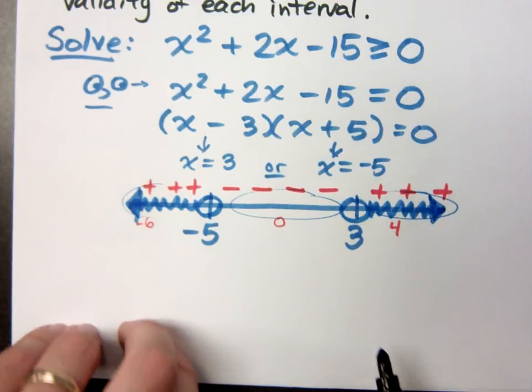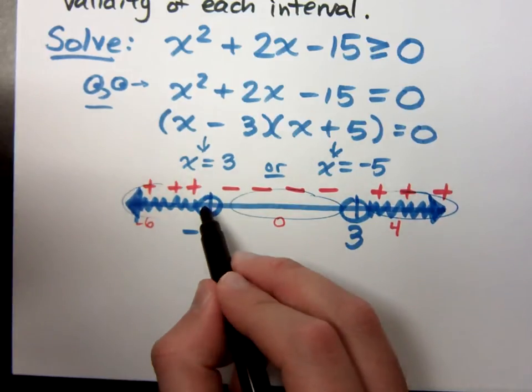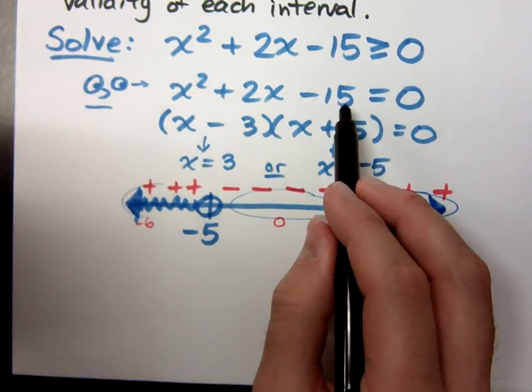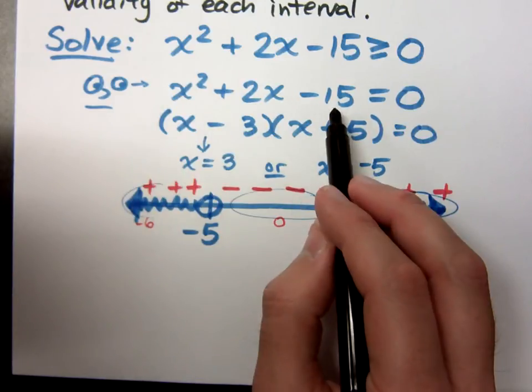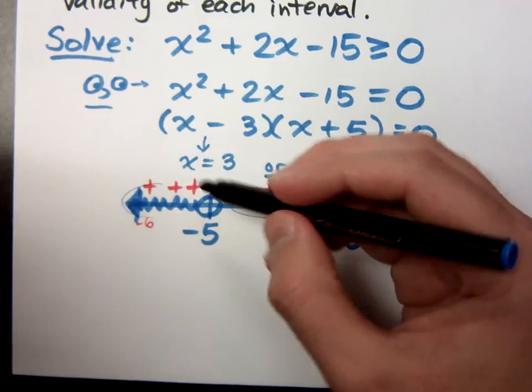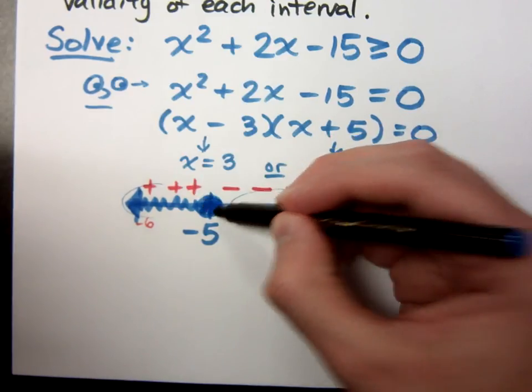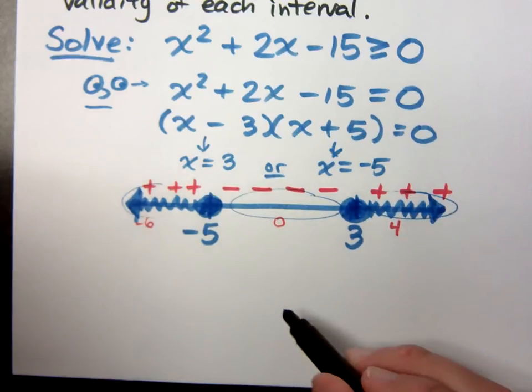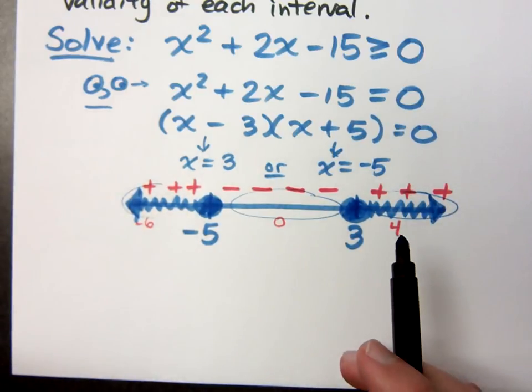What about the endpoints? Is negative 5 included? Well, negative 5 was a 0. It was what would make this original polynomial equal to 0. But since I can equal 0, that means I get to include this guy. Likewise, 3. 3 is a 0, and when I plug it in, I get a 0 as the result.